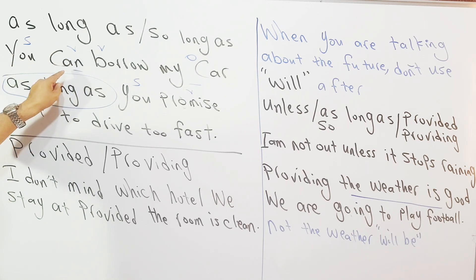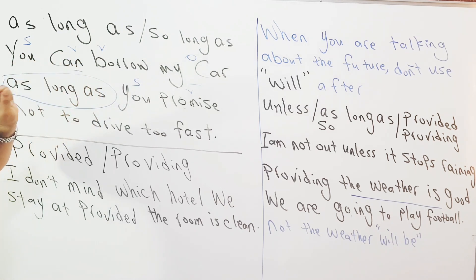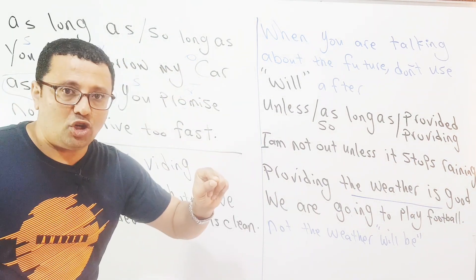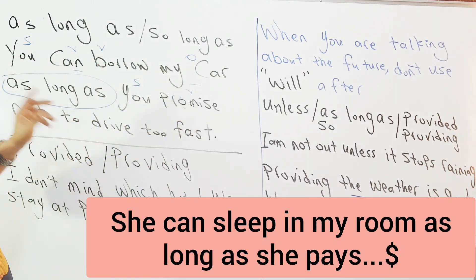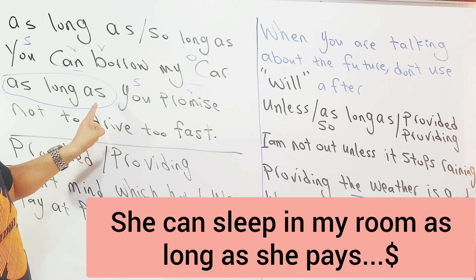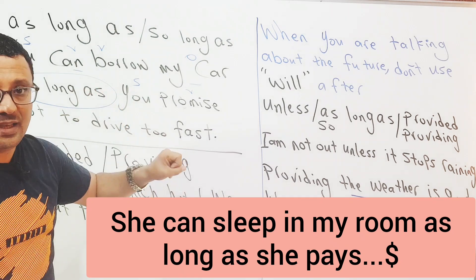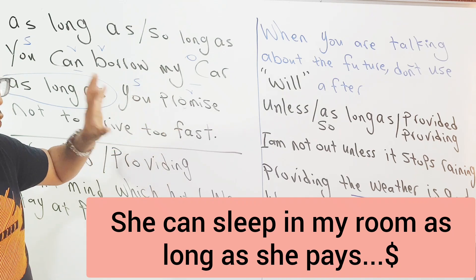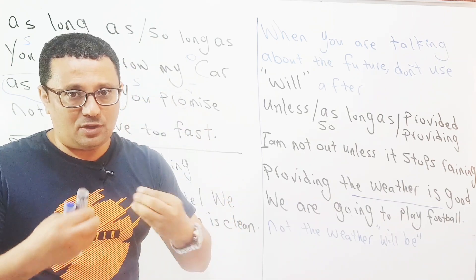'She can sleep in my room' - هي ممكن إنها تنام في غرفتي - بس بتحب تشترط عليها شرط. 'She can sleep in my room as long as' - طالما هي - أو بشرط إنها - 'she doesn't speak' - أو بشرط إنها 'she pays one hundred dollars' - إنها تدفع مئة دولار. يعني ضع الشرط الذي يناسبك. الآن هل فهمت كيف تستخدم 'as long as'؟